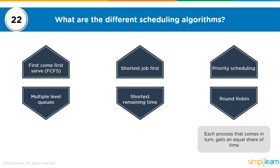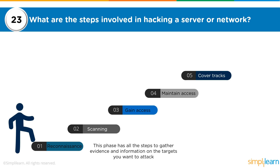In short, there are six different scheduling algorithms depending on how the operating system deals with processes. The next question is: what are the steps involved in hacking a server or network? This is an ethical hacking question. Every hack is unique, but a hack can be classified in five generic steps. The first step is always reconnaissance, also known as the information gathering phase, or footprinting or fingerprinting.